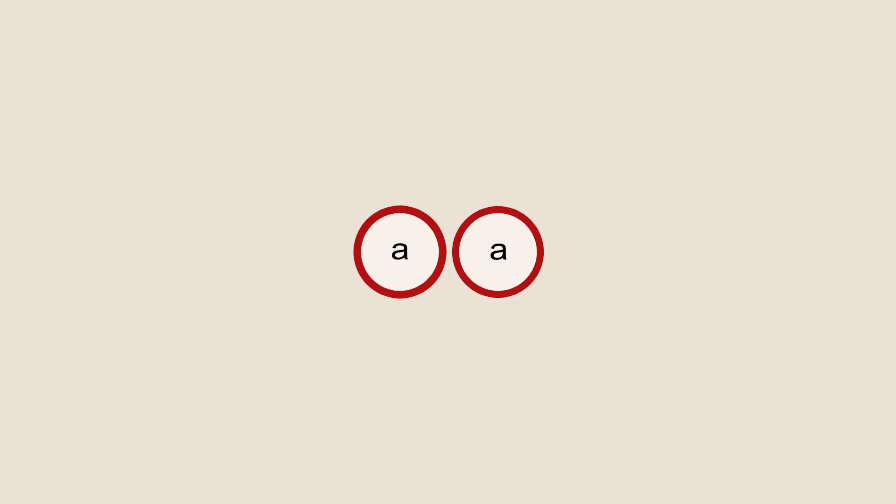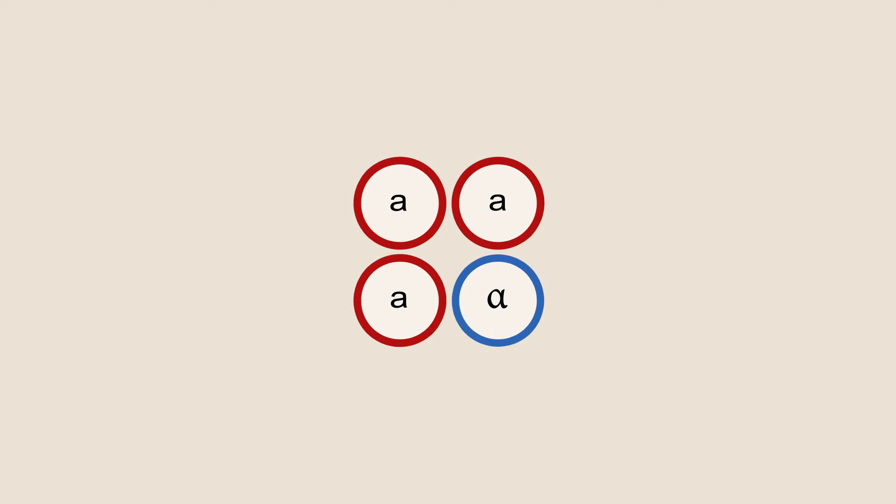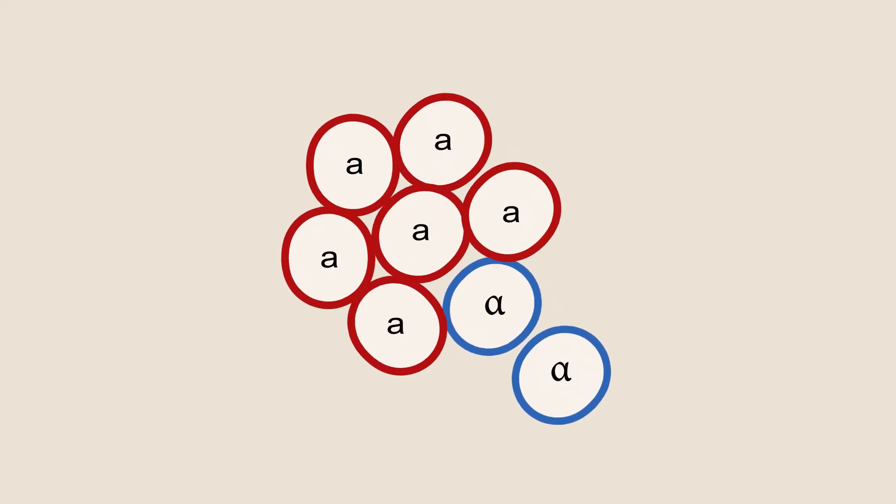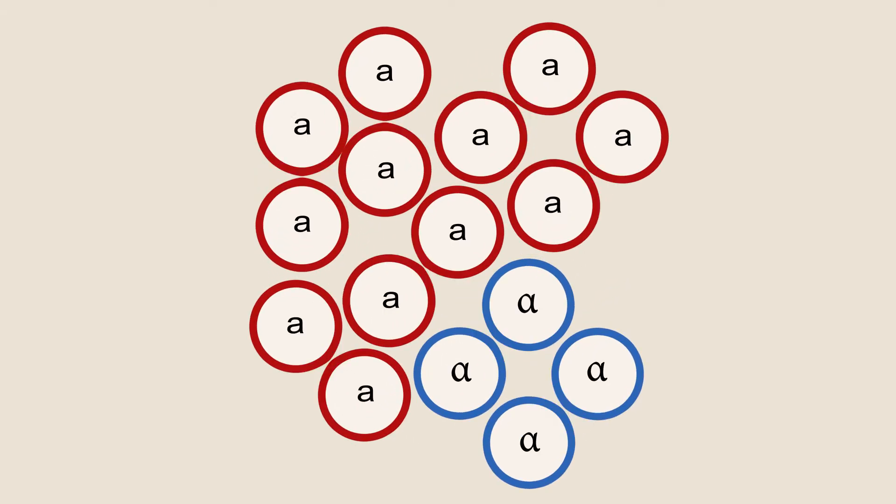A colony formed from a single cell will initially have only one mating type. However, as some cells switch mating type, such colony will usually contain both types.